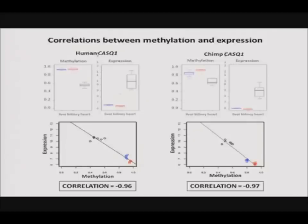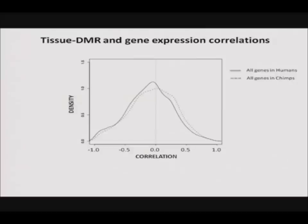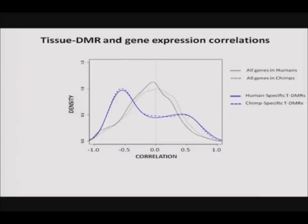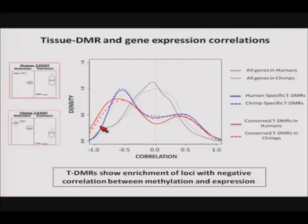The gray line shows the distribution of correlation values across all sites in the study, and we can see no real skew toward either negative or positive correlations. When we look at regions identified as TDMRs in a species-specific manner — that is, TDMRs only in humans or only in chimps — shown in blue, there is a clear excess of loci with negative correlations. Finally, when we look at regions identified as TDMRs in both species, showing conservation of the tissue-specific pattern, there is an even greater enrichment of loci with negative correlations. This indicates that overlapping TDMRs in particular may represent functionally important regions of methylation conserved between the two species.